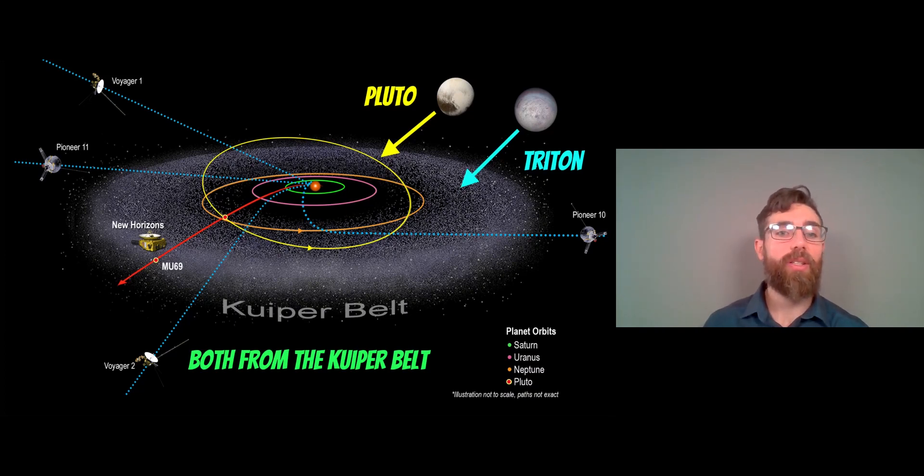Triton was the largest known Kuiper Belt object. It's no longer there, but it originated from it. So they have a common origin, which is why they have a common composition. And they look quite similar. They are basically a very similar object.